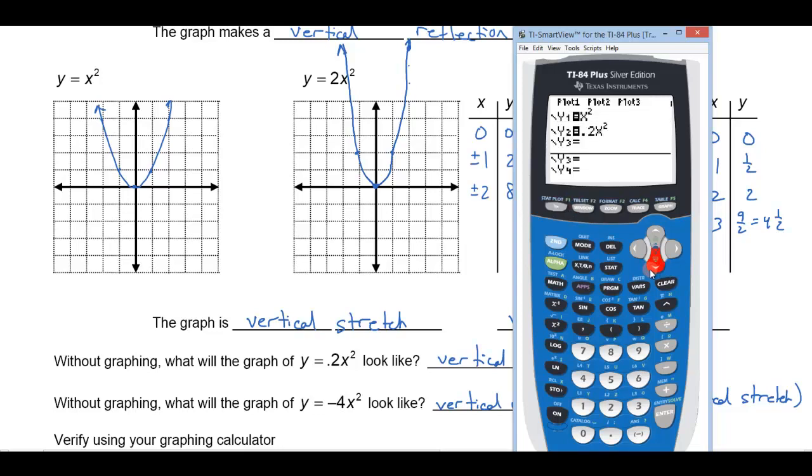That's on the same graph. Let's graph negative 4x squared. Now the negative should flip it over and the 4 should make it look skinnier. And sure enough it did.